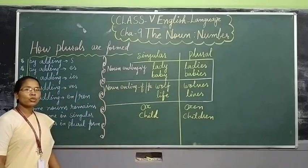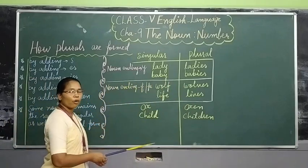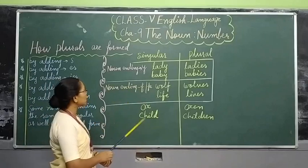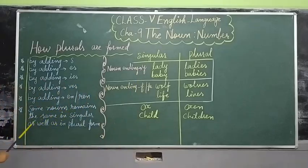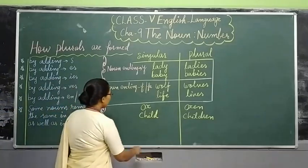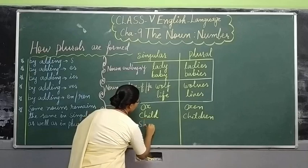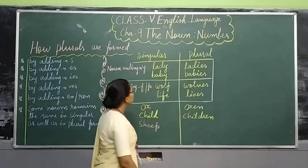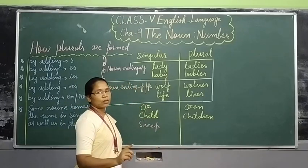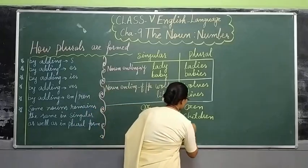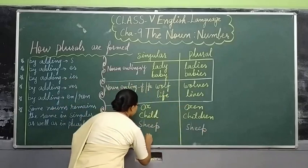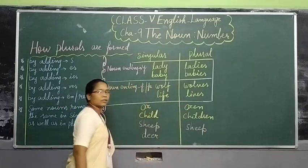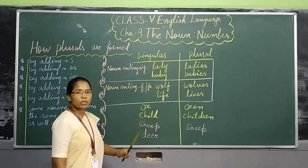There are some nouns where there is no change between singular and plural form — they remain the same. For example, 'sheep' stays 'sheep' in both singular and plural. Same way, 'deer' — one deer, more than one deer — no change.